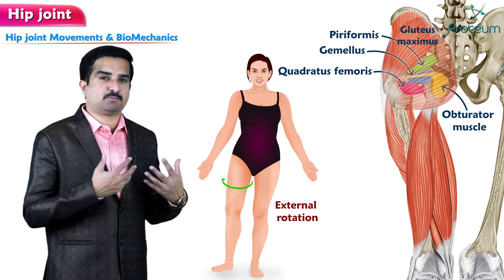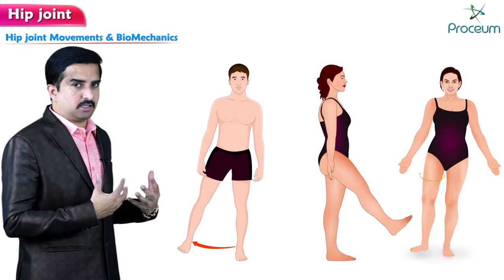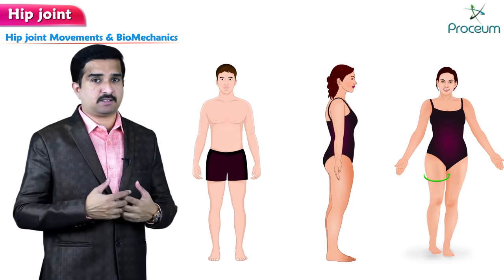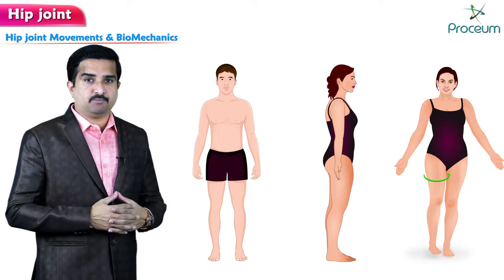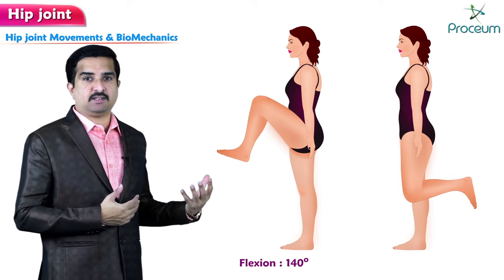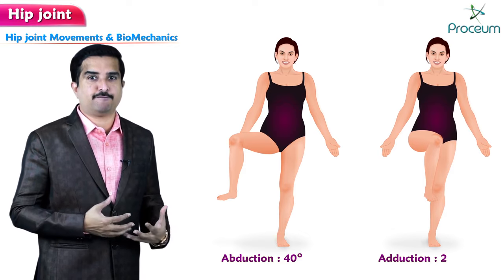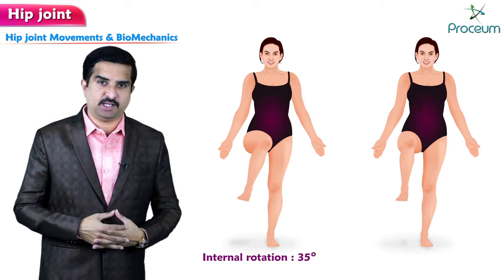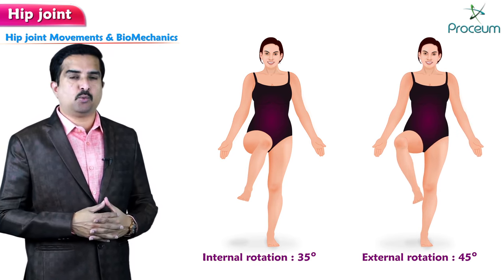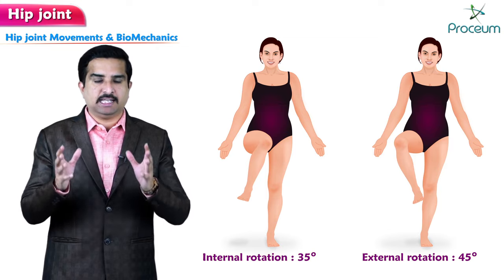These are the muscles responsible for various movements of the hip joint. The range of movements, occurring when the knee is flexed at 90 degrees, are: flexion 140 degrees, extension 15 degrees, abduction 40 degrees, adduction 25 degrees, internal rotation 35 degrees, and external rotation 45 degrees.